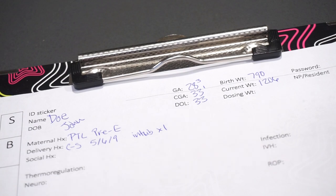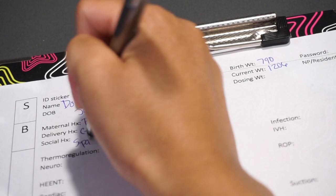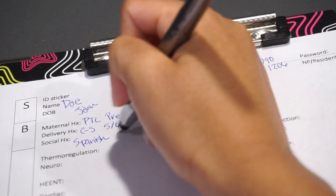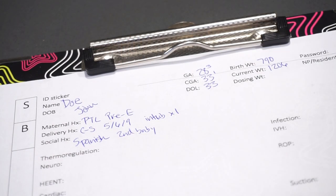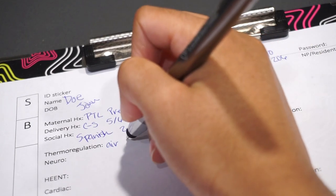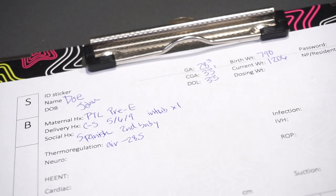As far as social history, parents only speak Spanish, so they'll need an interpreter. And this is their second baby. Thermoreg, he is in the isolette on air control thermal, and it is set to 28.5. Temps have been fine throughout the day.